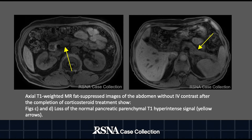Axial T1-weighted, MR fat-suppressed images of the abdomen without IV contrast after completion of corticosteroid treatment show, in figures C and D, loss of the normal pancreatic parenchymal T1 hyperintense signal, shown by the yellow arrows.